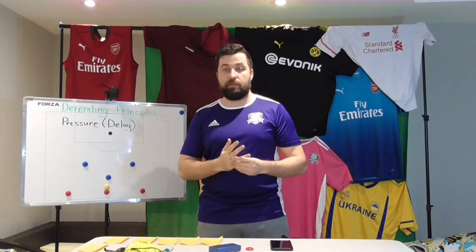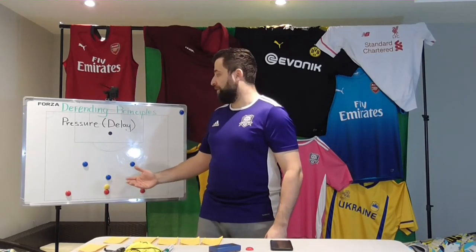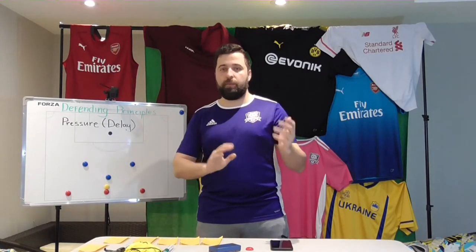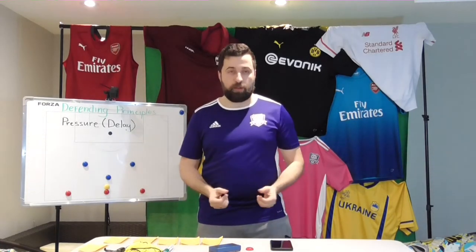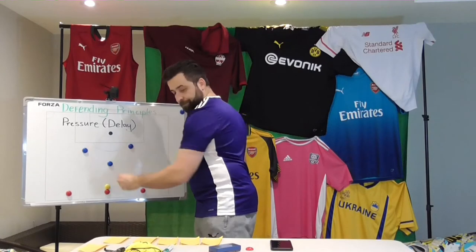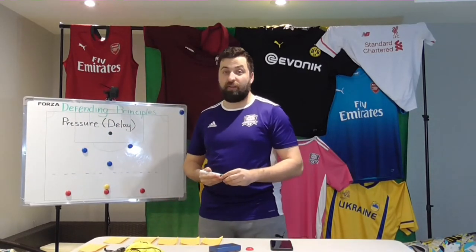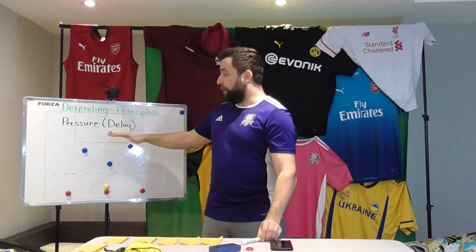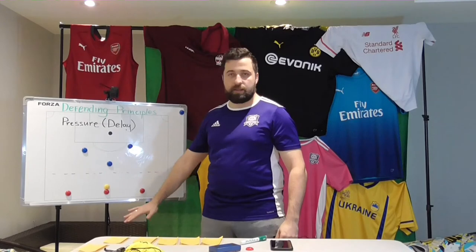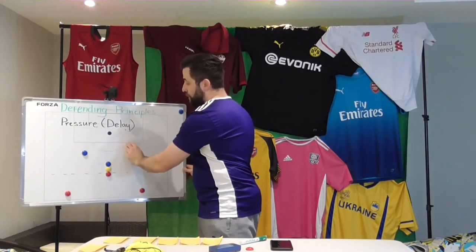A few things worth taking into account: first is field awareness — where on the pitch are we so we can apply pressure appropriately? If we are in the opponent's half, we can be a little more aggressive, while in the defensive half we have to be more cautious about space behind us. A good concept here is the line of confrontation — an imaginary line on the field, which could be just above the central circle, the halfway line, or anywhere the team agrees on. We agree before the match that above this line we give the opponents time and space, but the moment they cross it, everyone applies pressure and we try to win the ball.